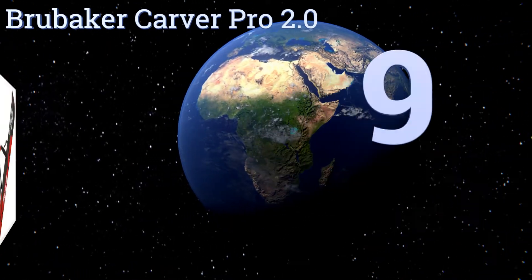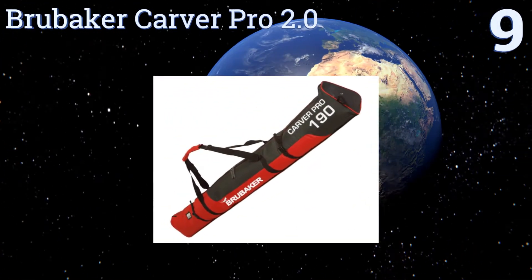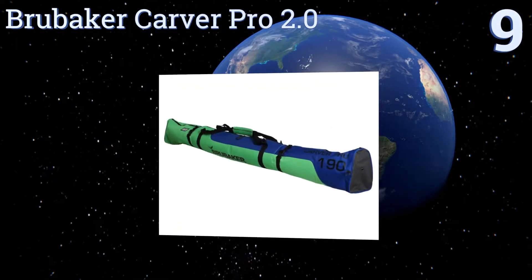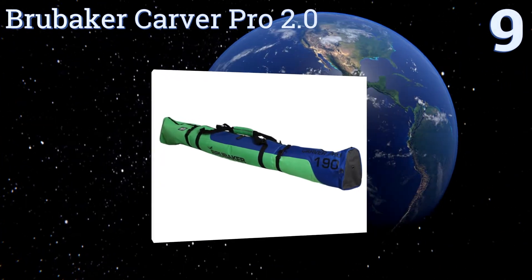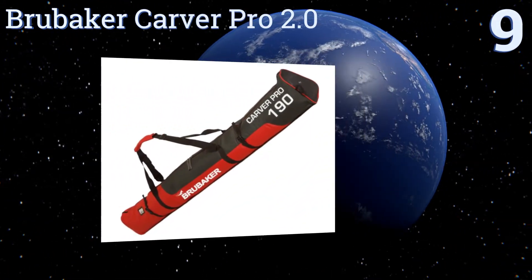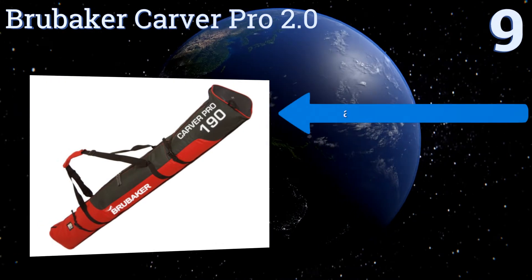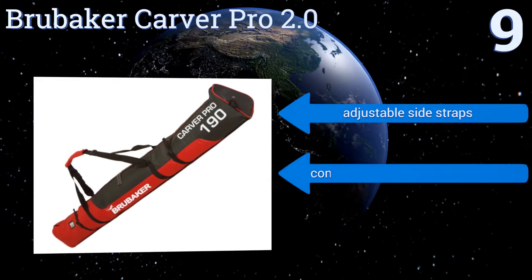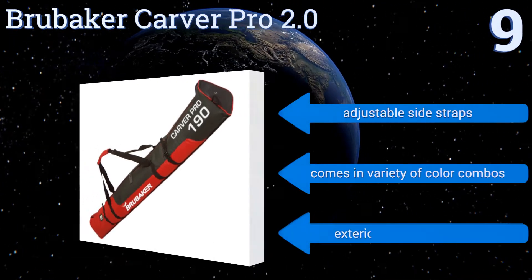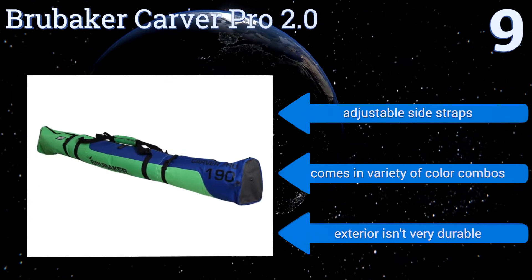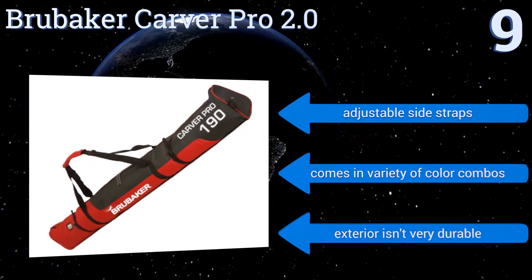Starting off our list at number nine, the Brewbaker Carver Pro 2.0 incorporates a fiberglass fabric lining on the inside which keeps it from absorbing moisture but also from being cut by your skis. The area around the bindings is heavily padded too, though it could also use some extra protection elsewhere. It comes with adjustable side straps and a variety of color combinations, but the exterior isn't very durable.